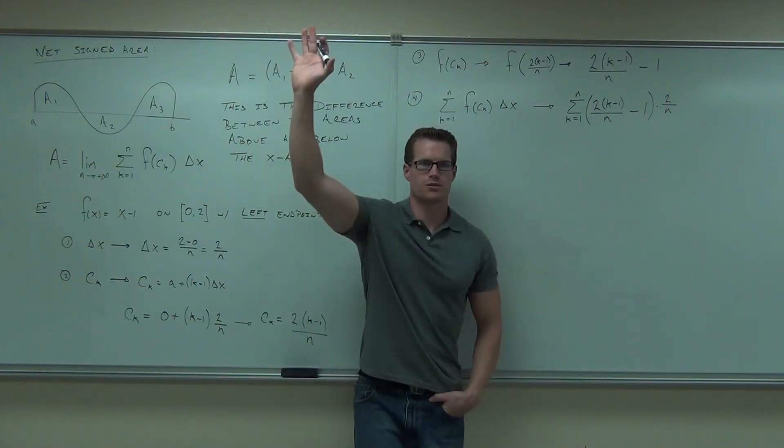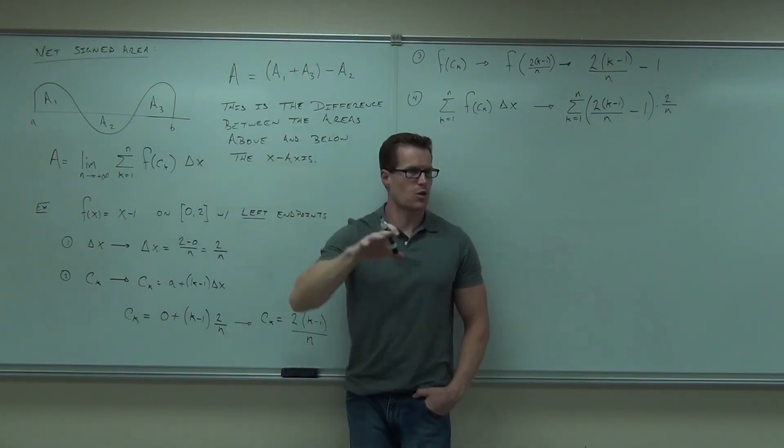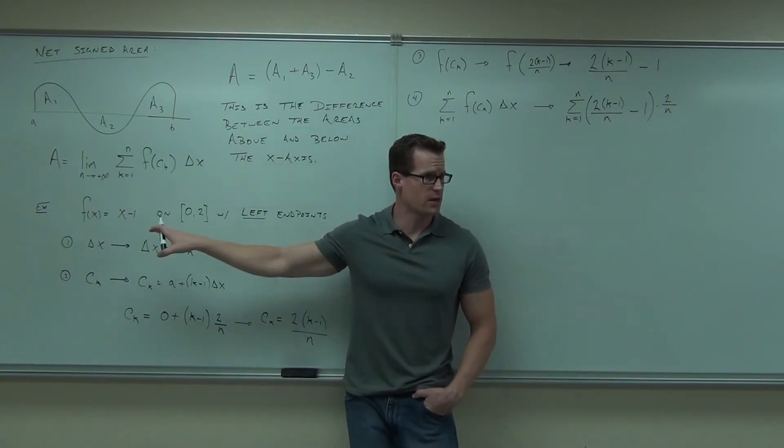Would you raise your hand if you're okay with this so far? So far? Yes, everybody? So you're okay where we got the delta x, right? b minus a over n, that's just going to be 2 over n. You're okay with the c sub k?